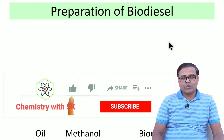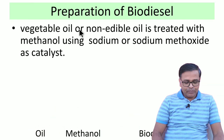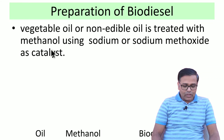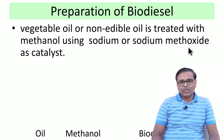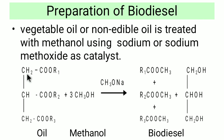Now we will see the preparation of biodiesel — how biodiesel is prepared. It is a transesterification reaction in which we take vegetable oil or non-edible oil and treat it with methanol using sodium or sodium methoxide as a catalyst, resulting in the formation of biodiesel. The reaction involves the structure CH₂COOR₁, CHCOOR₂, CH₂COOR₃ — these are the various alkyl groups representing the oil, generally non-edible or vegetable oil — reacting with methanol in the presence of sodium methoxide.